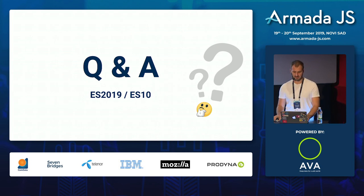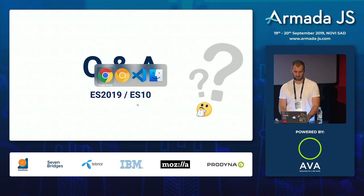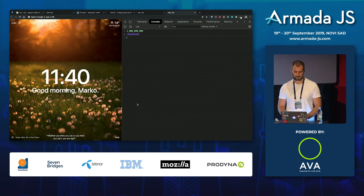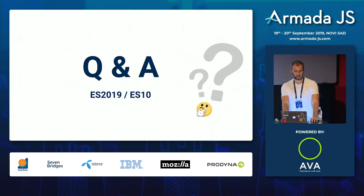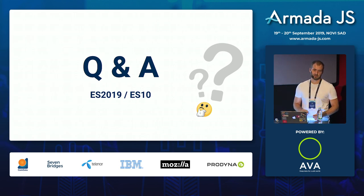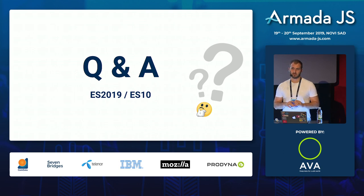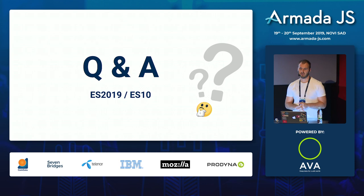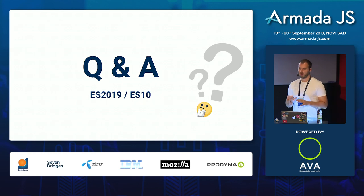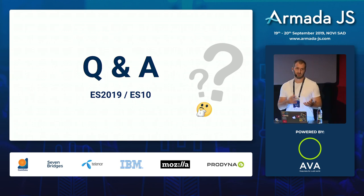Q&A: 'Do you think observables should be part of the JavaScript API and available out of the box, like promises?' I don't think observables should be part of JavaScript. I think JavaScript should stay flexible - observables should be something you have the option to use, not something forced like in Angular where you have to use RxJS if you want to use the framework. I work mostly with React, and I really like that React lets you use whatever you want.